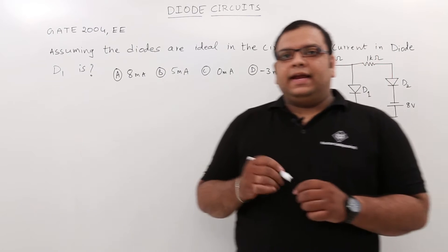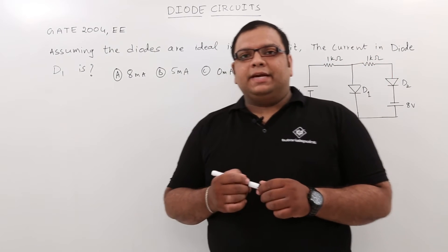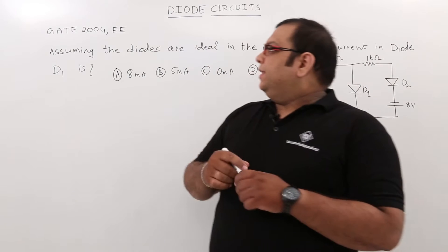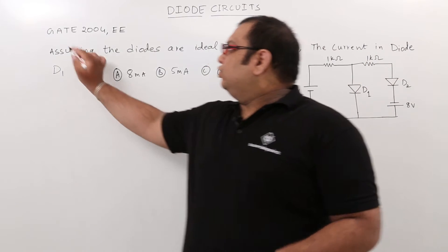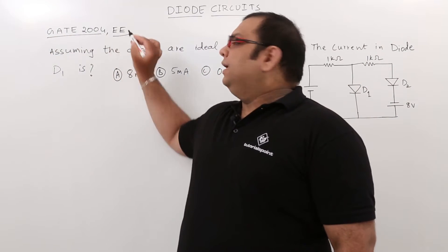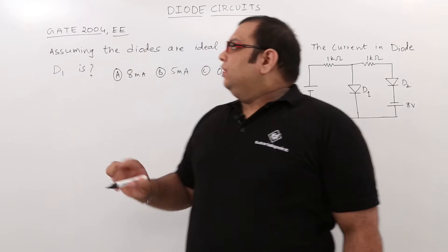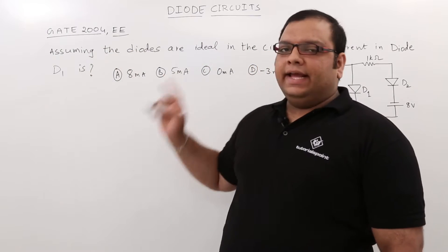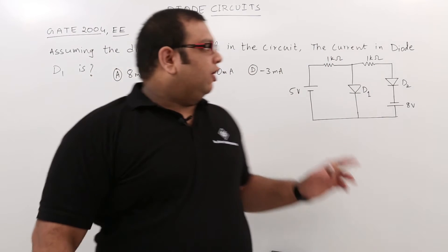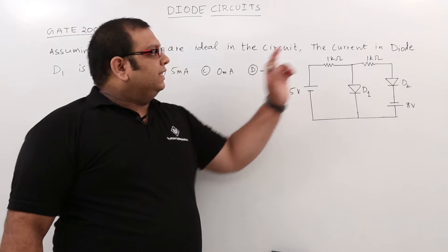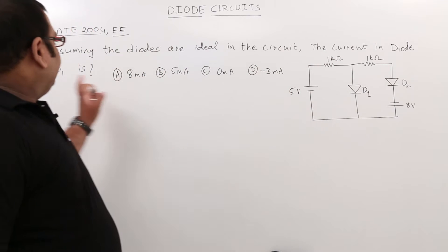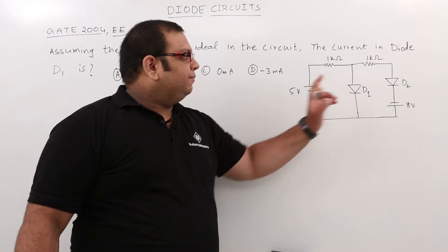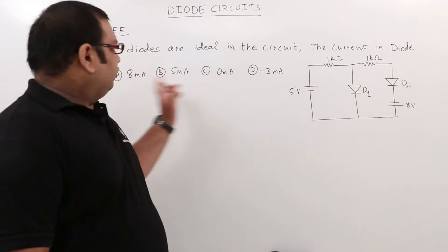In this class let us discuss another Gate previous gate problem on the diode circuit topic. This is Gate 2004 EEE question. The question statement is: assuming the diodes are ideal in the following circuit, the current in the diode D1 is — we need to find out the current in D1, and we are given 4 options.